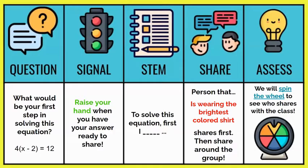So I'm going to break you out into groups and you are going to share what would be your first step in solving this equation. You can use that sentence stem that's right there for you: 'To solve this equation, first I blank.' If you need to write that down or take a picture of that right now, that might help you before you go into your room. Again: to solve this equation, first I would blank. When you get into your group, I want the person with the brightest colored shirt to share first, then share around in the group.